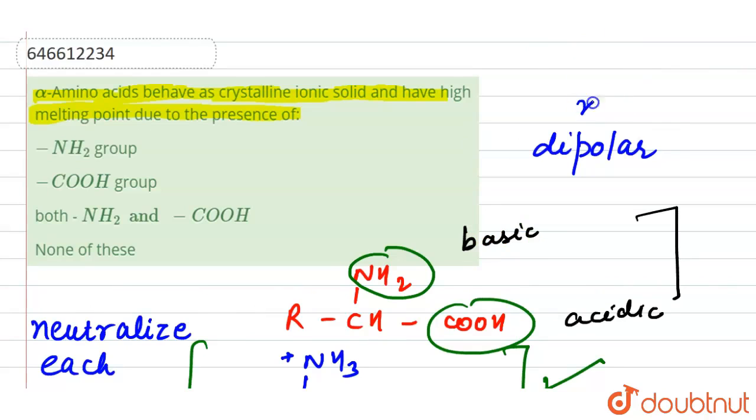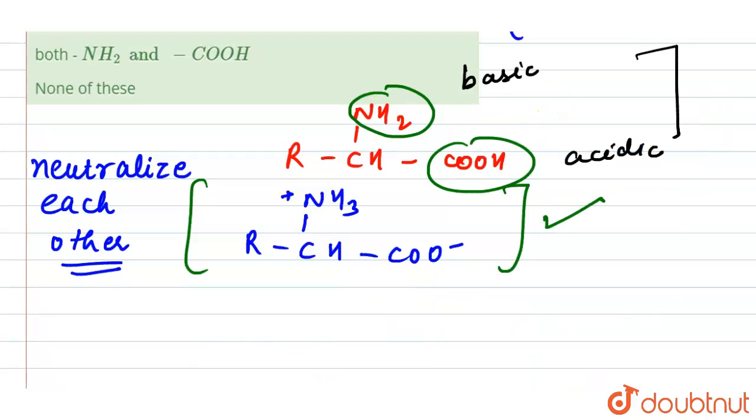This zwitter ion formation is considered as evidence of the nature of alpha amino acids. These are non-volatile crystalline solids that decompose at high temperature.